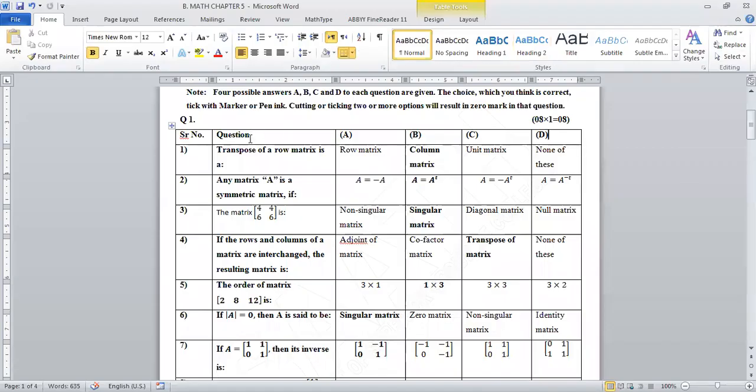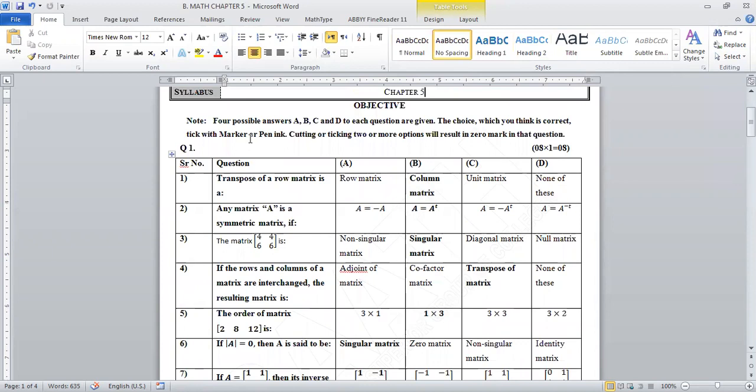Bismillahirrahmanirrahim, assalamu alaikum dear students. Welcome to Business Math Chapter 5 pre-discussion. Let's begin: The transpose of a row matrix is called a column matrix. Any matrix A is a symmetric matrix if A is equal to A transpose. The matrix [4 4; 6 6] is called a singular matrix.